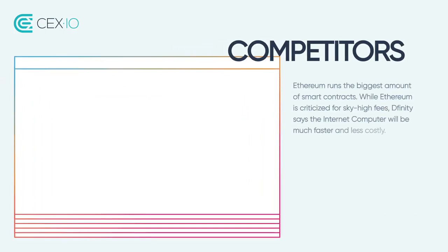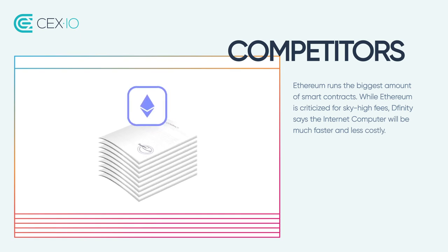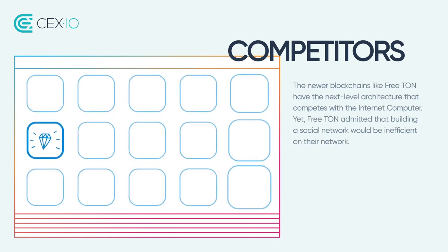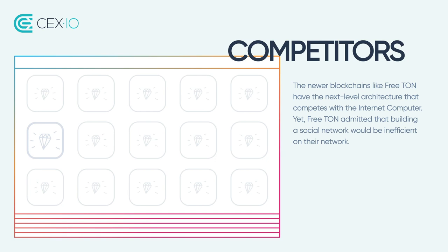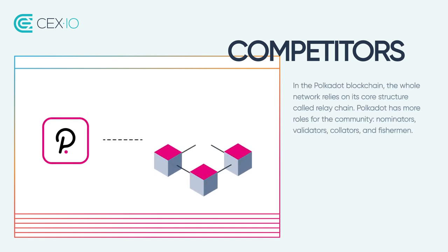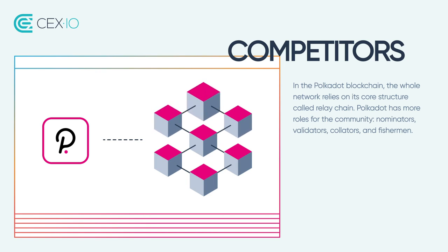Ethereum runs the biggest amount of smart contracts. While Ethereum is criticized for sky-high fees, DFINITY says the Internet Computer will be much faster and less costly. The newer blockchains like FreeTUN have next-level architecture that competes with the Internet Computer, yet FreeTUN admitted that building a social network would be inefficient on their network. In the Polkadot blockchain, the whole network relies on its core structure called the Relay Chain. Polkadot has more roles for the community — nominators, validators, collators, and fishermen — yet the governance depends on the council members and technical committee.